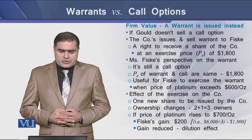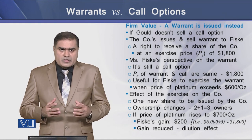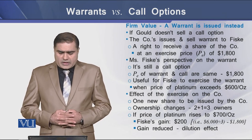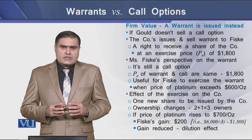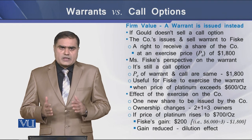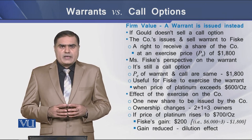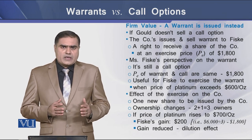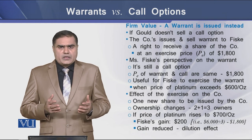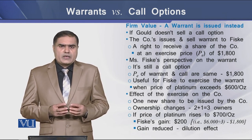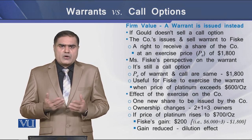When the warrant is exercised, the firm issues one new share to Fisky, so ownership changes. Now there are three owners in the company. If the price of platinum rises to $700 per ounce, Fisky's gain is $200. Comparing the two scenarios: Fisky's gain under the call option is $300, whereas under the warrant it is $200 — a decline of $100 per share. This decline is termed dilution, caused by the increase in the number of shares while the total profit remains the same. This is the dilutive effect of issuing a warrant on the firm's common stock.